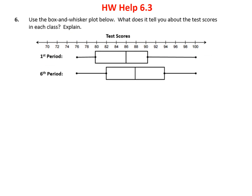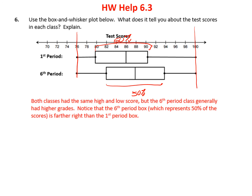Problem 6 asks us to look at the whisker plots below and what they tell you about the test scores in each class. One thing to notice is that as far as the high score goes, they both had people who got 100, so in terms of high scores they're equal. But remember the box is 50% of the data. Notice that 50% of 6th period compared to 50% of 1st period — generally speaking, 6th period tended to score higher. They both had the same low score and the same high score, but look where the box is — 6th period tends to have higher scores than 1st period.